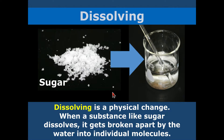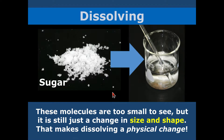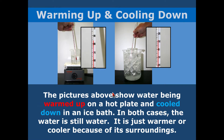It did not combine to make a brand new substance. All it did was change the size and shape, and that's why dissolving is a physical change, not a chemical change. There is also warming and cooling, which can happen for both physical and chemical changes — we'll dive into those.